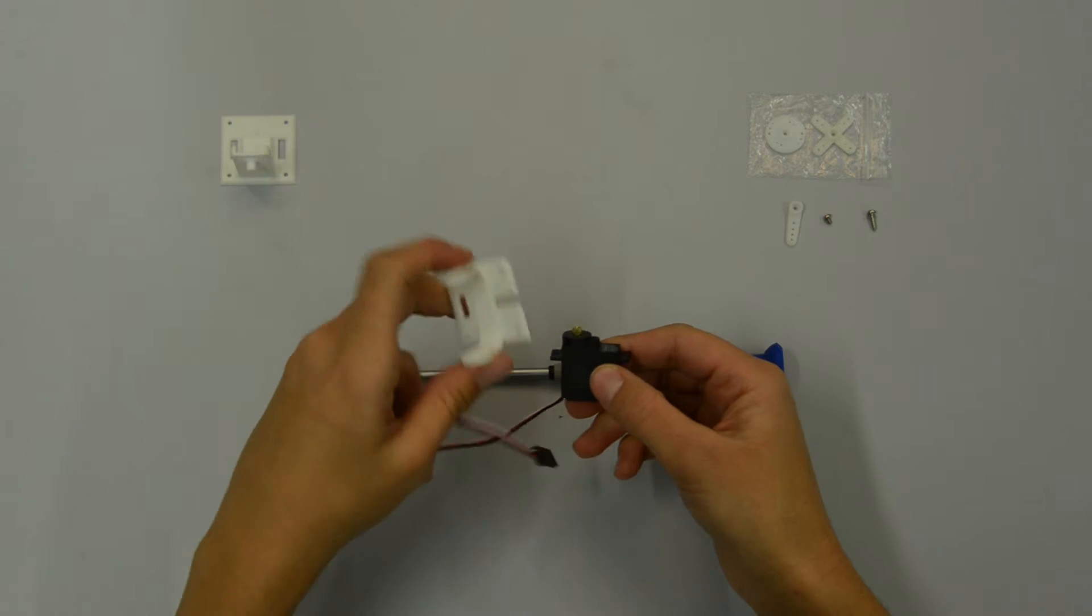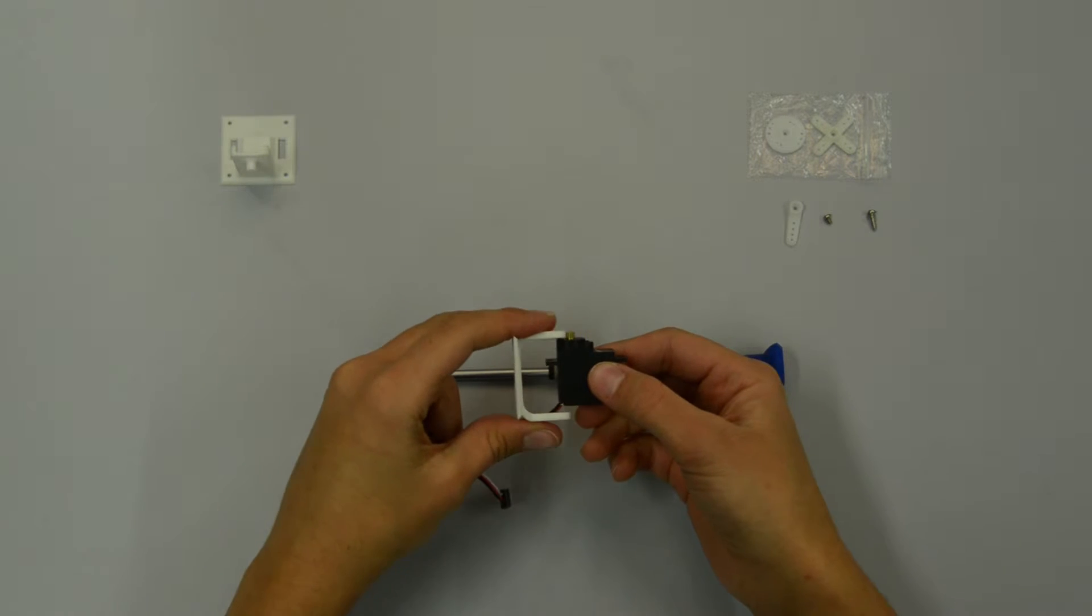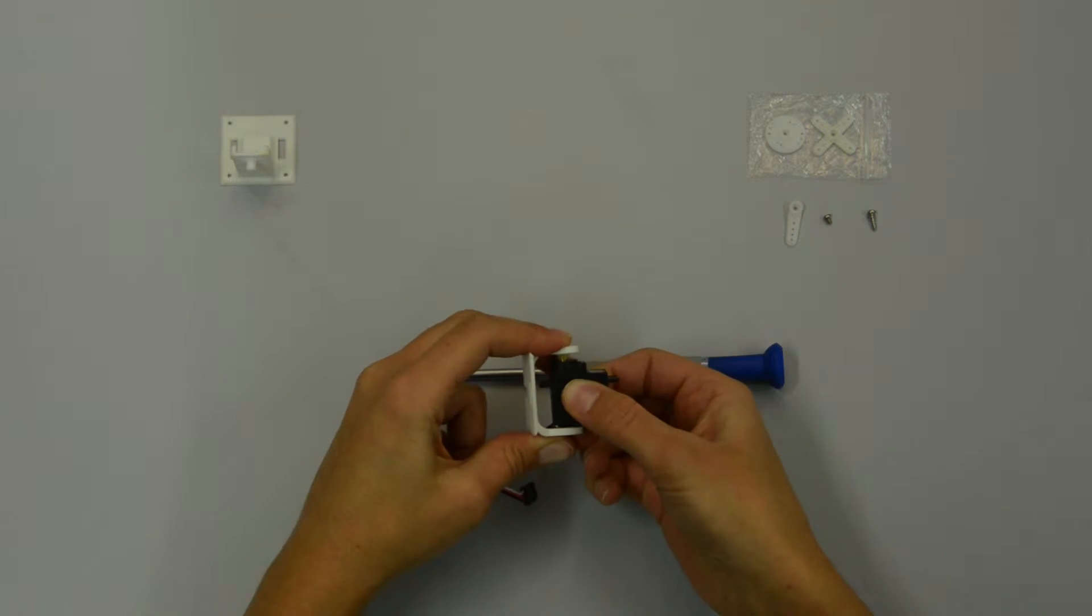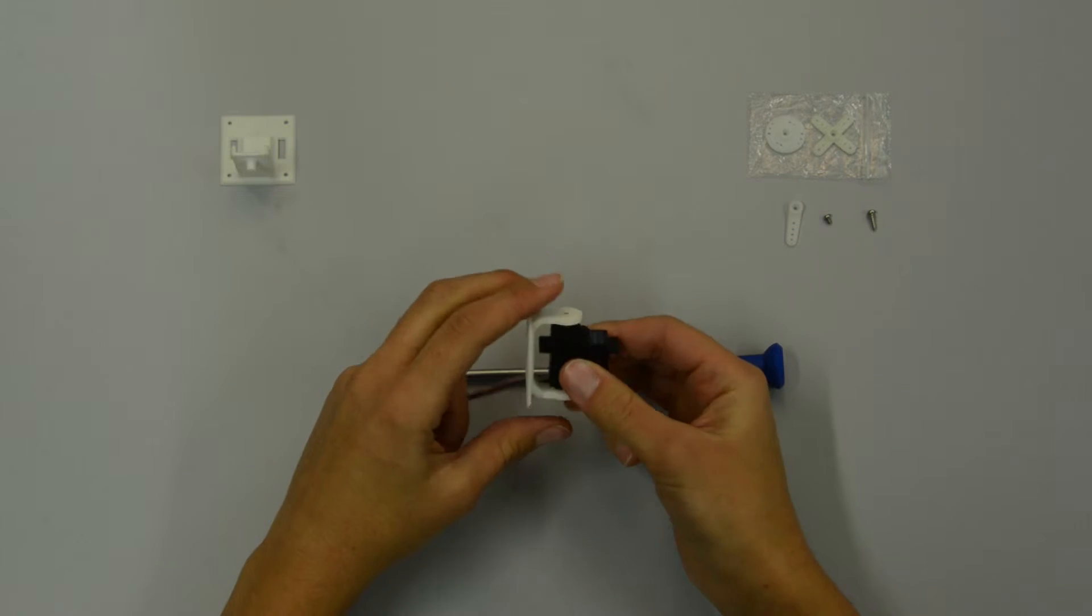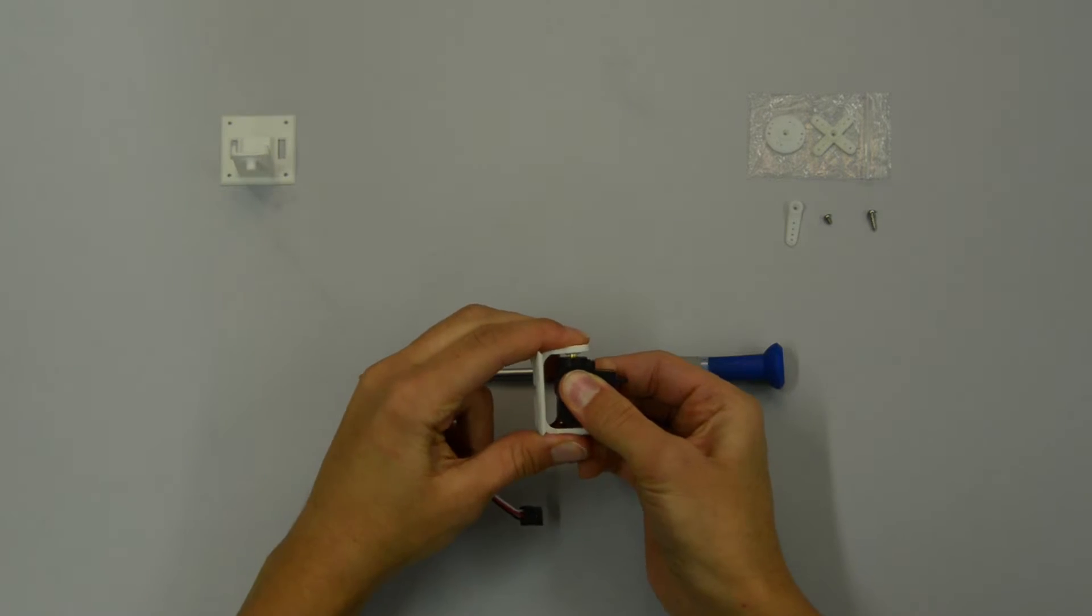Then, attach the frame part to the servo. The side with the smaller hole fits onto the gear on the output shaft. Make sure to put it on such that it is aligned with the servo body.